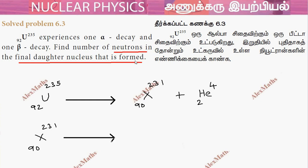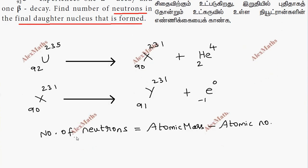This one is beta decay, so beta decay emits an electron, which is minus 1, 0. Taking the minus 1, the atomic number increases from 90 to 91.